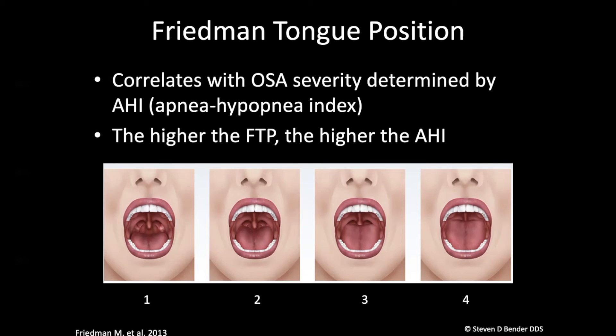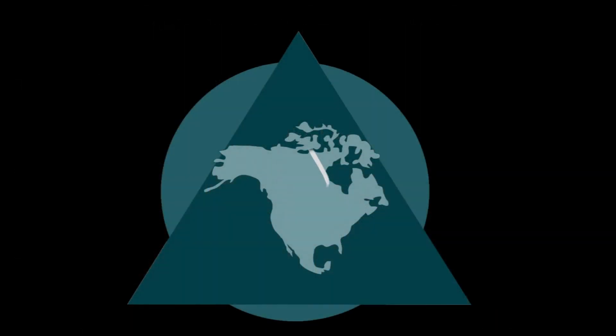This has been found to correlate significantly with what's known as the apnea-hypopnea index — in other words, the severity of sleep apnea. So the higher the Friedman tongue position, or FTP, would be associated with a higher apnea-hypopnea index.